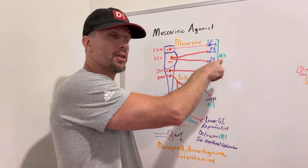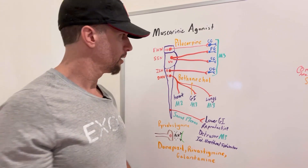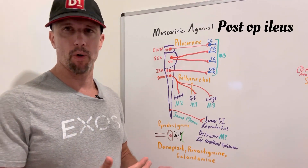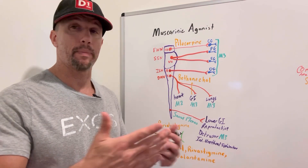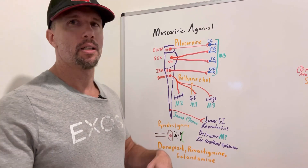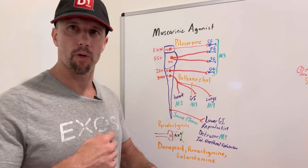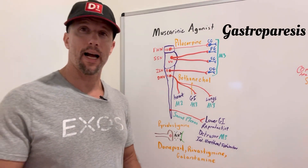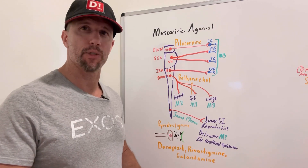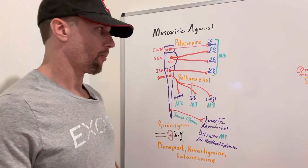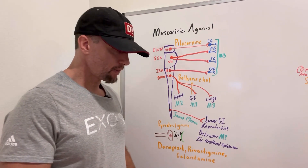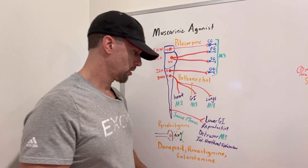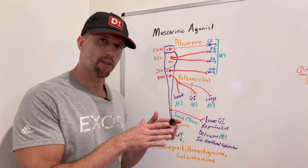These are direct-acting muscarinic agonists because they bind directly to the muscarinic type 3 receptor and mimic acetylcholine. Bethanecol is another one. Indications for bethanecol include post-op ileus — after abdominal surgery patients may go a week without a bowel movement, so bethanecol stimulates peristalsis and gets things moving. It's also used for gastroparesis in diabetes mellitus where food just sits in the stomach, and for urinary retention when someone is having trouble voiding.